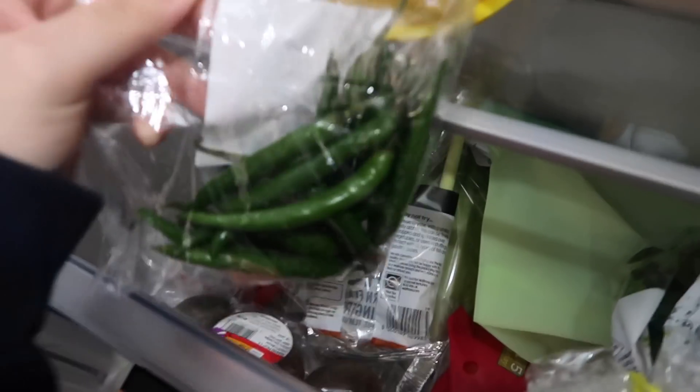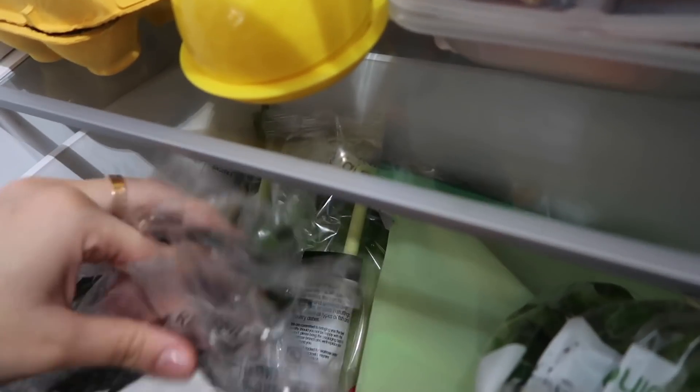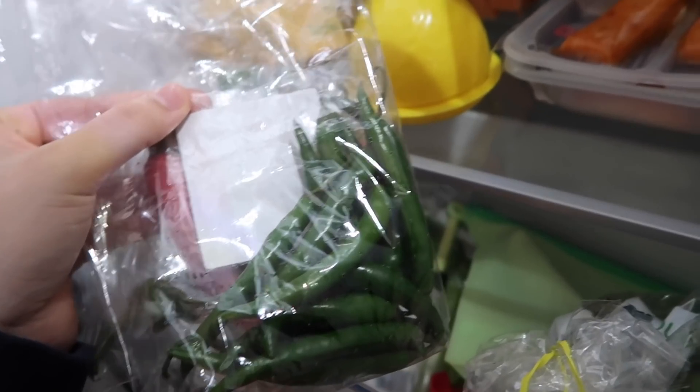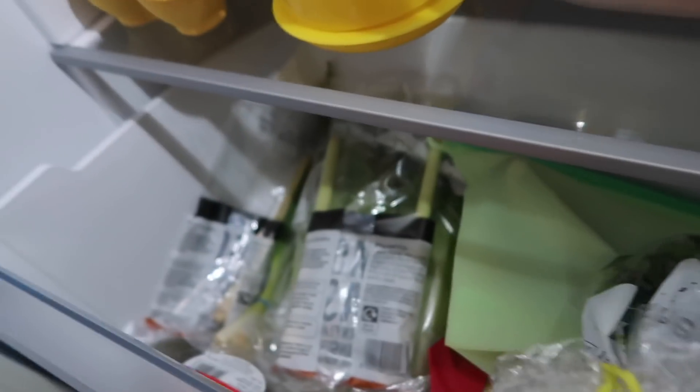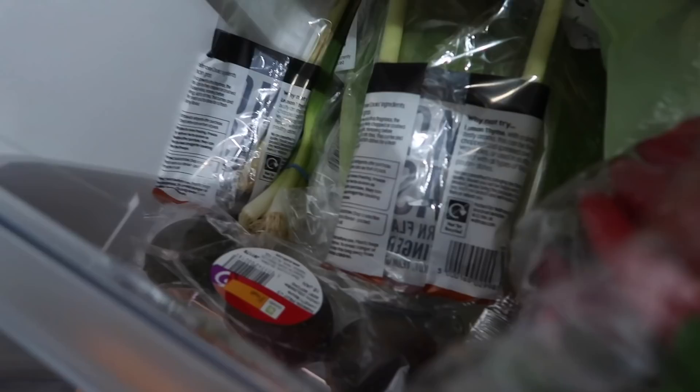And then here I have a cucumber, a half cucumber, some carrots. Sorry guys I don't really know how to show this. Chili, a lot of chili, is a lot of plastic as well I know but that's how it's sold here. But if you know a different way I can get like less plastic please let me know, I would love to actually learn.